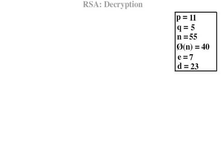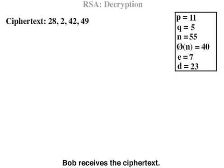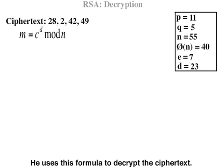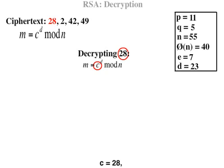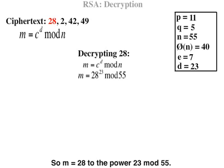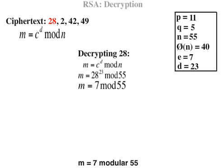RSA decryption. Bob receives the ciphertext and uses this formula to decrypt it. Decrypting 28: M equals C to the power of D mod N, where C equals 28, D equals 23, N equals 55. So M equals 28 to the power of 23 mod 55. M equals 7 mod 55. 7 equals H. This is our first plaintext: H.